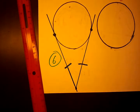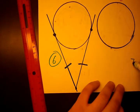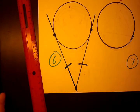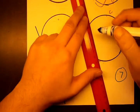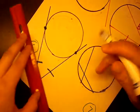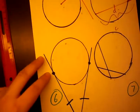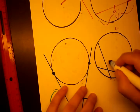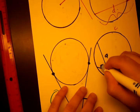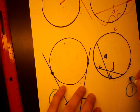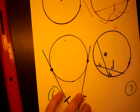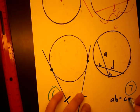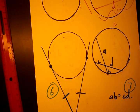Theorem number 7 states that when we have two chords — a chord is any line that touches two points on the circle — and we label the respective segments A, B, C, and D, then A times B equals C times D. And those are our major circle theorems.